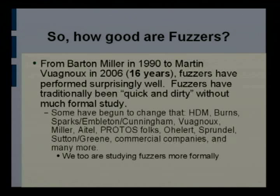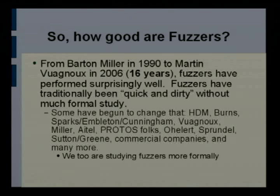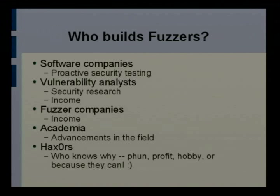Traditionally, especially if you're looking for memory corruption bugs — which are still the majority of all bugs out there — buffer overflows, heap overflows, stack overflows, pointer overflows — that's where the goodies are. If you have a server written in C that runs on a box without heap and stack protection, fuzz it because there's a good chance there's a bug in there. A lot of people have been doing fuzzing for a lot of years, and it's still alive and kicking.